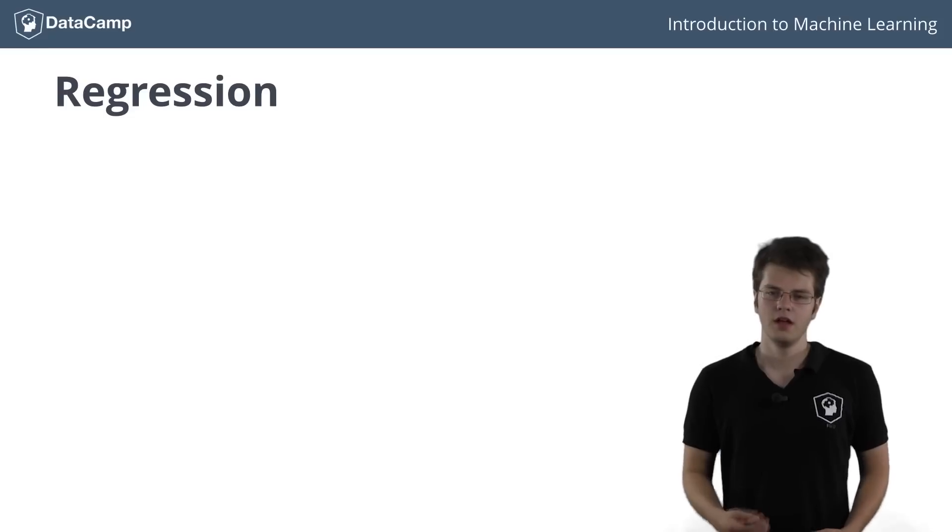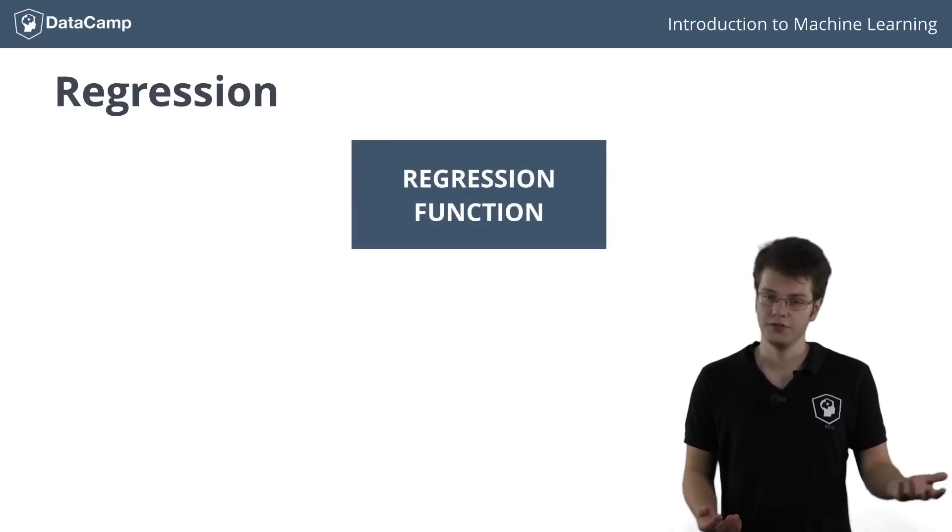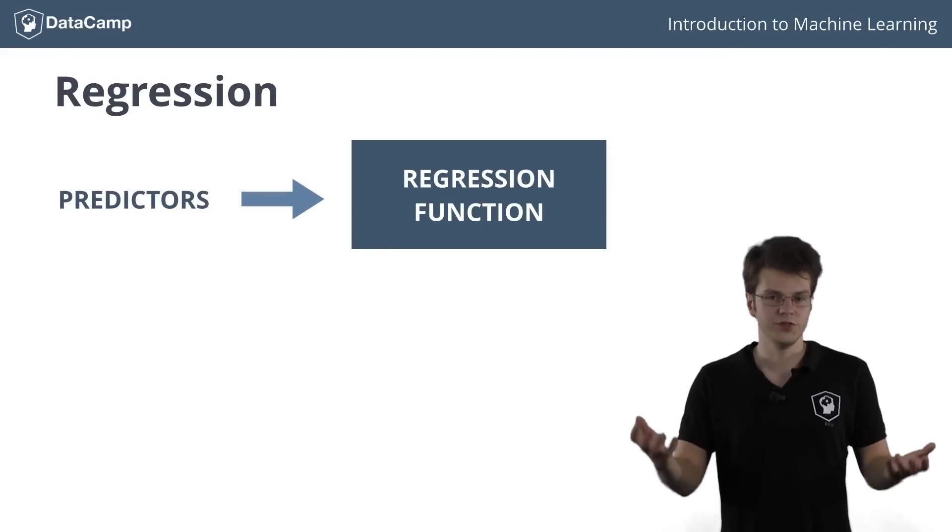Moving on, a regression problem is a kind of machine learning problem that tries to predict a continuous or quantitative value for an input based on previous information. The input variables are called the predictors, and the output the response.